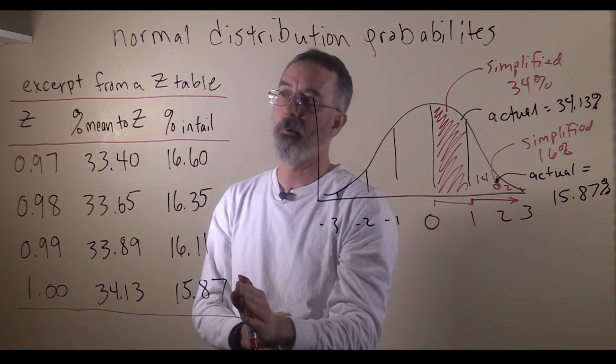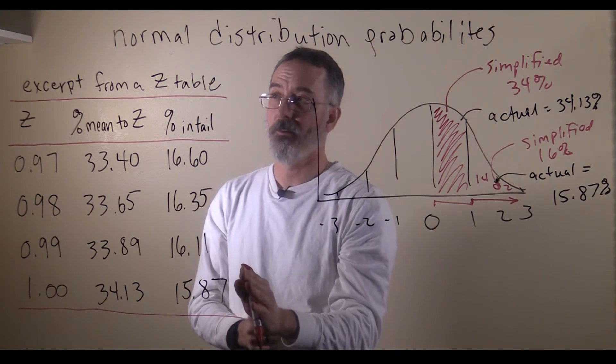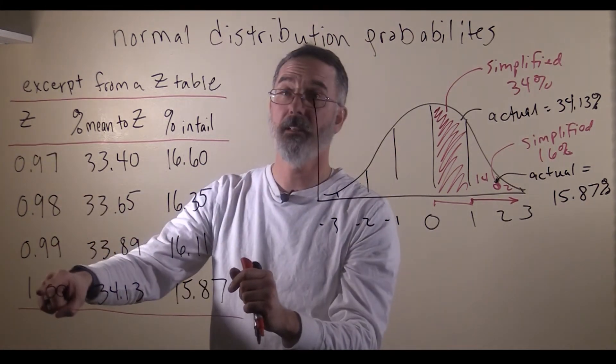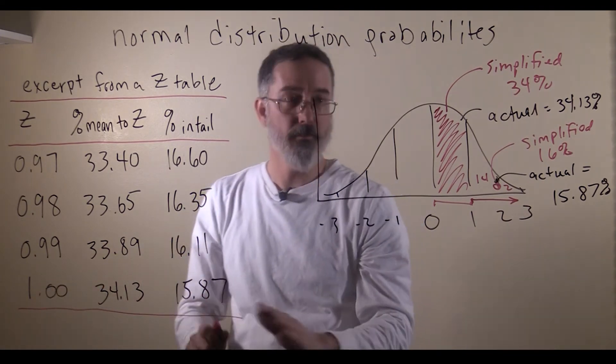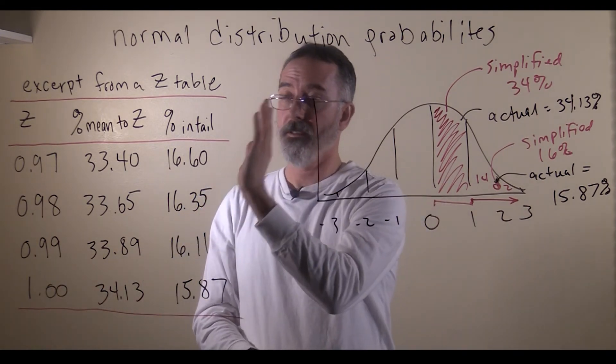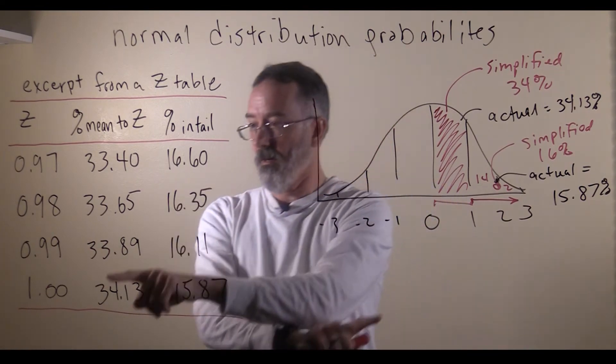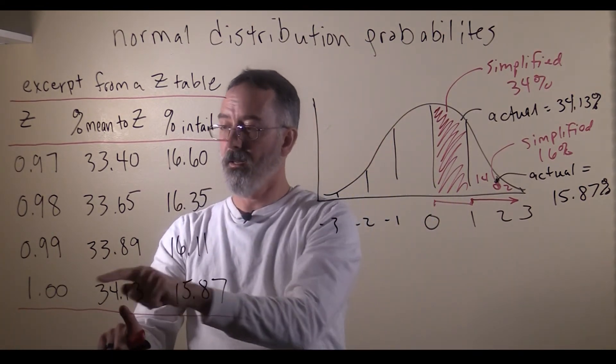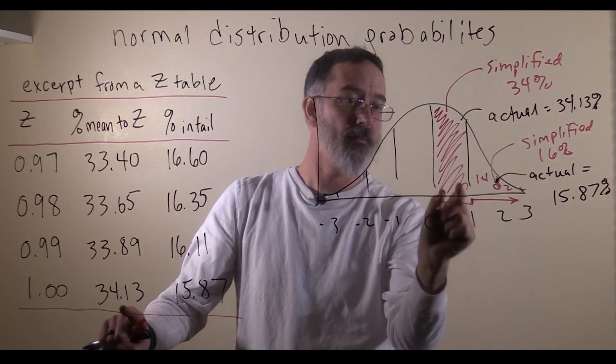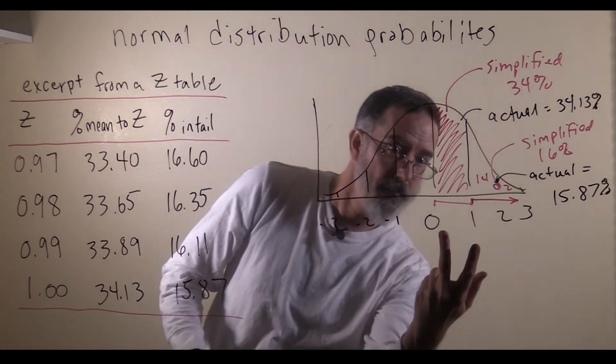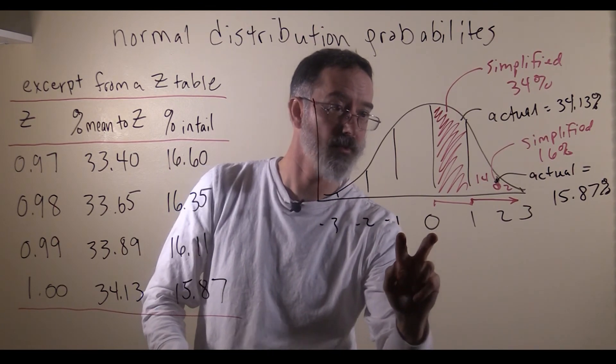Another feature of this table is that, almost always, you only have positive z values here. You do not have negative z values. The reason is because the distribution is symmetrical. So the area in between the mean and 1 on the positive side, that 34.13%, is the same as the area between 0 and negative 1. It is symmetrical.